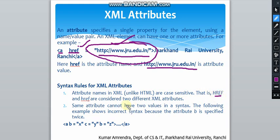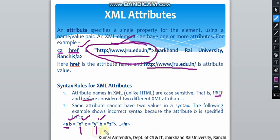That means capital 'href' and small 'href' are considered two different XML attributes. We must not supply the same attribute value twice. An attribute cannot have two values in a single syntax. The following example shows incorrect syntax because the attribute 'b' is specified twice — 'b', 'c', and 'b' are the attribute names, and 'x', 'y', and 'z' are the attribute values.